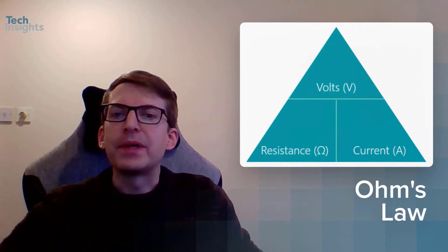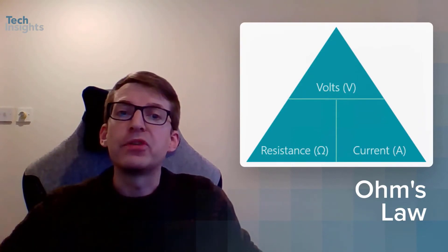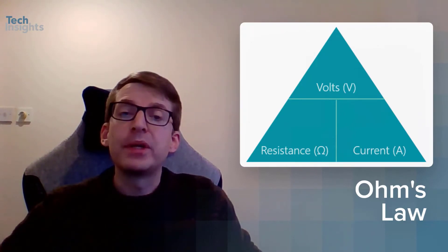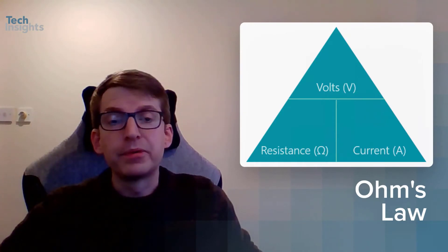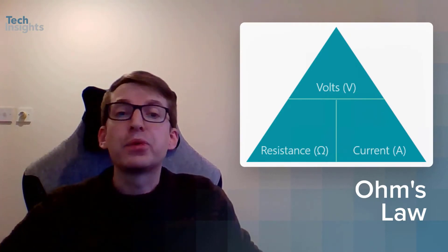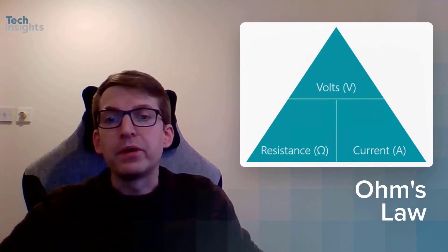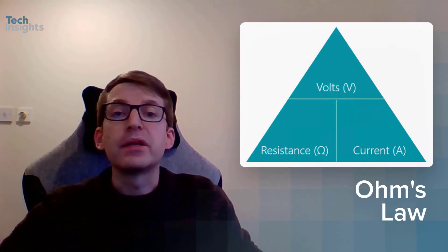Put simply, the on-resistance is the electrical resistance encountered when the transistor is switched from its OFF to ON state, and relates to one of the most fundamental electronics equations, Ohm's law: V equals IR, or R equals V over I, as summarized here in another triangle.